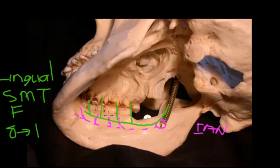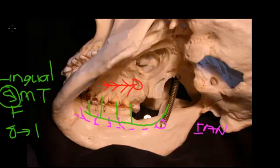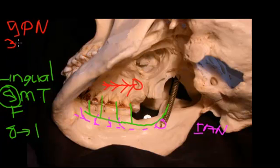If we were extracting teeth, we would have to block the lingual nerve as well, because we would be tearing the gingiva. The other branch we need to consider from this medial view is the greater palatine nerve in the upper jaw, which runs forward and supplies the gingiva and mucous membranes of the hard palate from about tooth three to tooth eight.